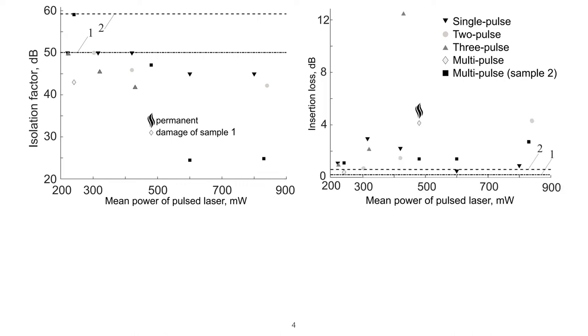We also show the observed change in insertion loss of the tested isolators. The maximum achieved insertion loss was 12.3 dB, although a value of 0.2 dB was measured before the experiment for this sample.